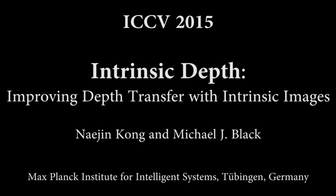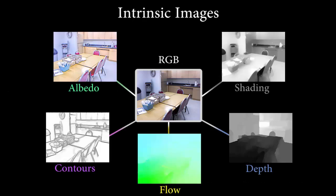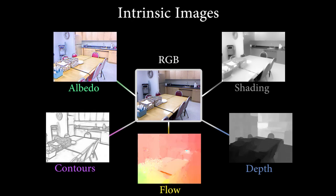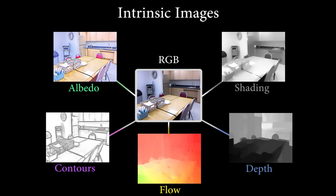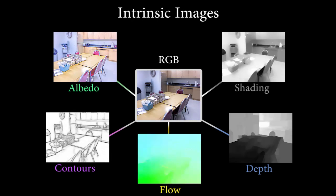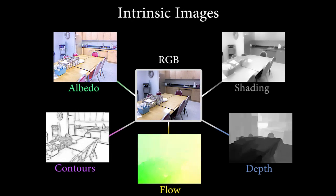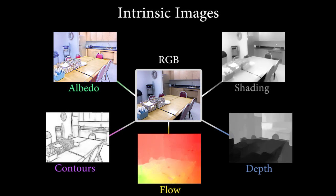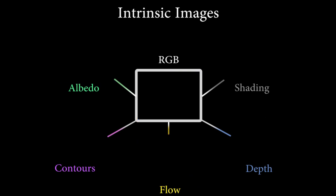We formulate the estimation of dense depth maps from video sequences as a problem of intrinsic image estimation. Intrinsic images correspond to physical properties of the scene, such as depth, shading, albedo, surface boundaries, and optical flow.